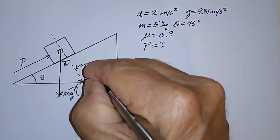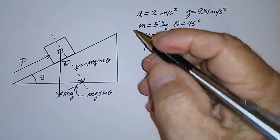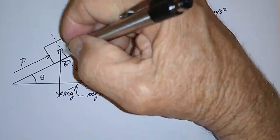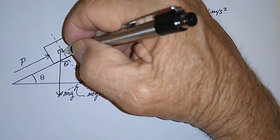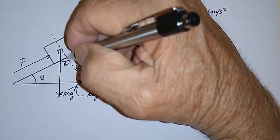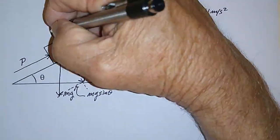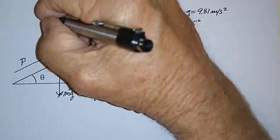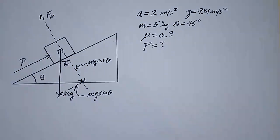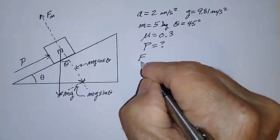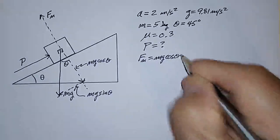And the perpendicular component is MG times cosine theta. The reason that's important is because the force due to gravity pushing down on the plane perpendicular to it causes the plane to push back with a force equal to that, which we call the normal force, F normal. And F normal is equal to MG cosine theta.